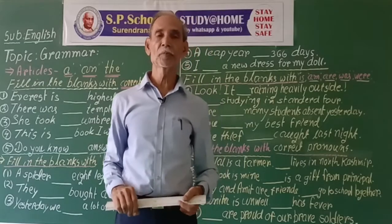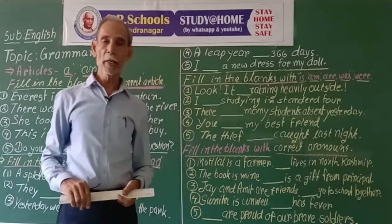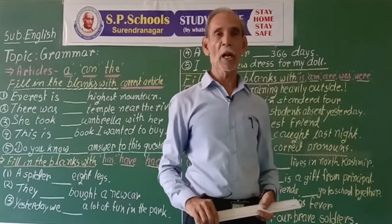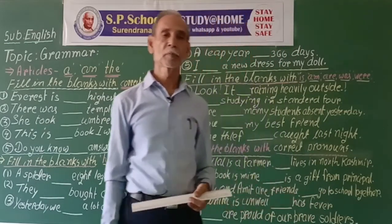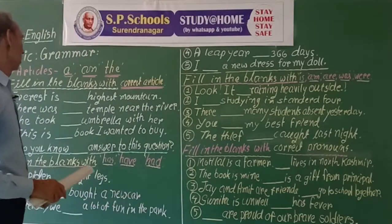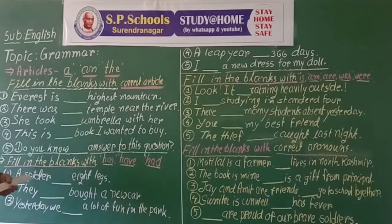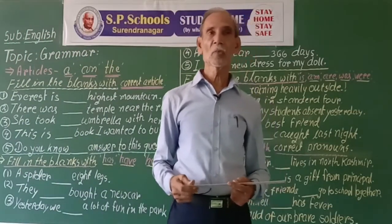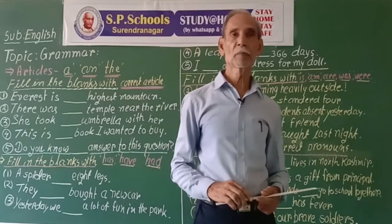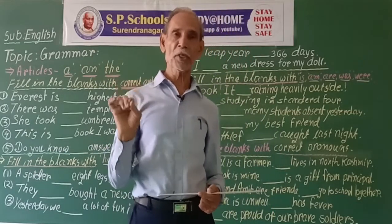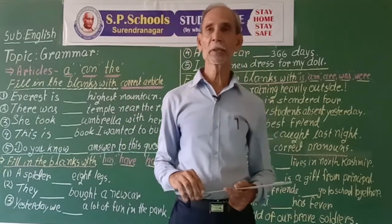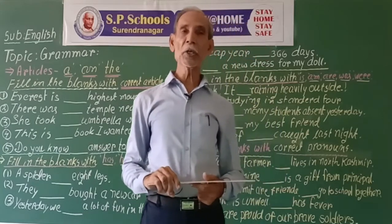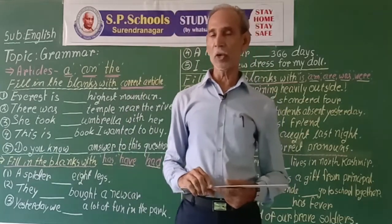Hello students, today we shall learn some topics about grammar. There are eight types of words in grammar. Some are nouns — they are the names given to a person, place, or object to identify it. Some words are used in place of nouns; they are called pronouns.